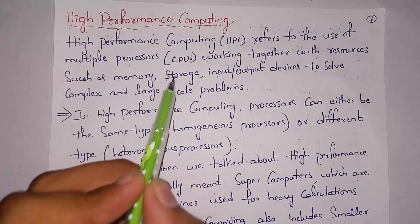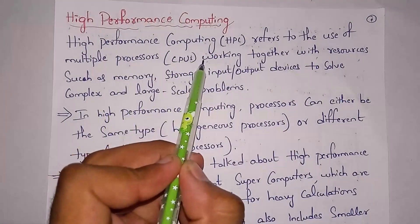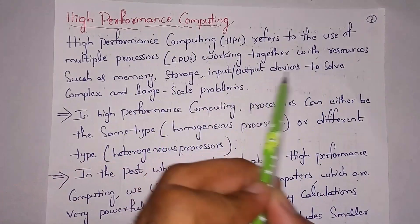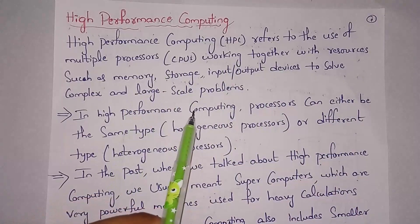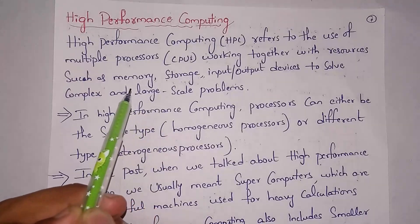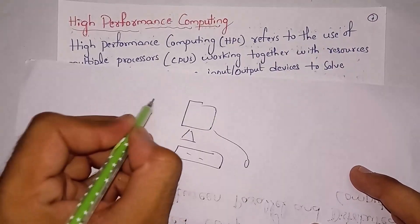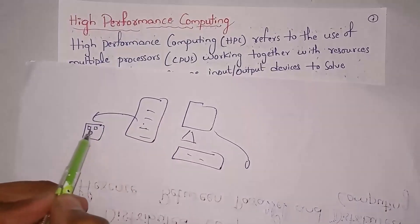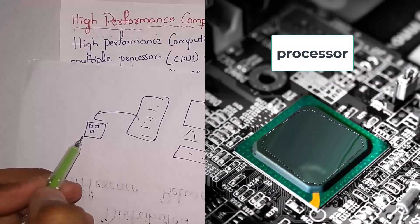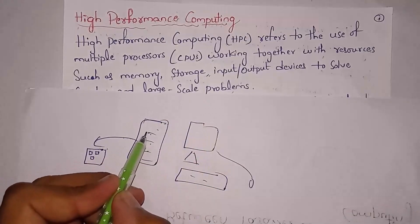High performance computing refers to the use of multiple processors working together with resources such as memory, storage, and input/output devices to solve complex and large-scale problems. In high performance computing we use multiple processors, which makes our computer faster. For example, inside a CPU there are multiple processors connected to the motherboard, and the CPU contains memory and storage — that is hard disk and RAM.